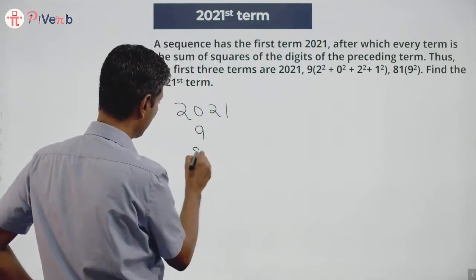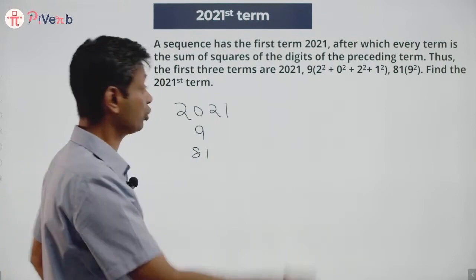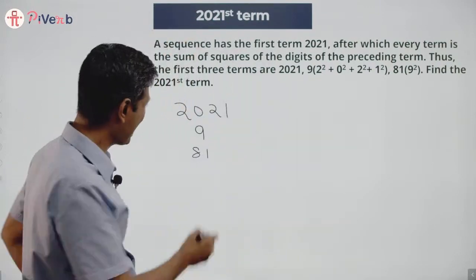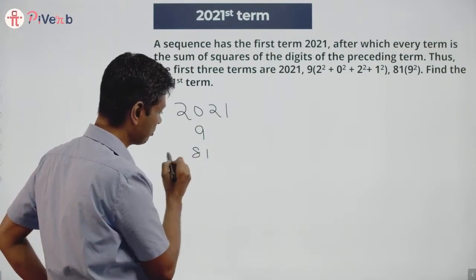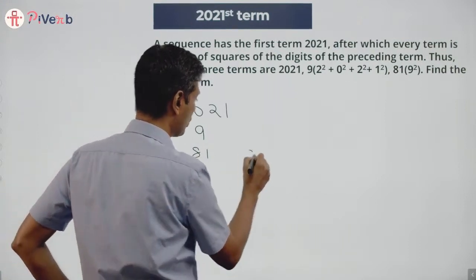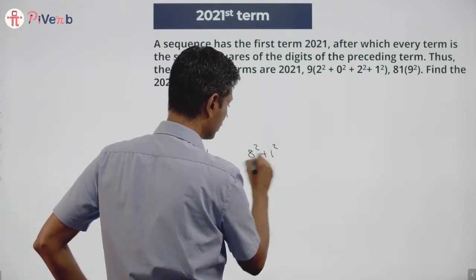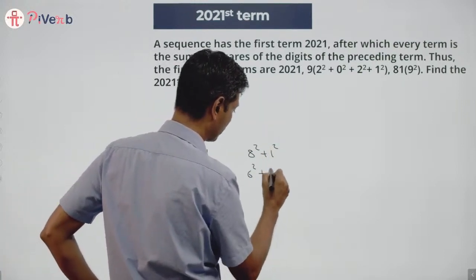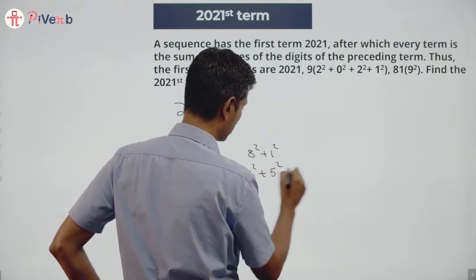is 81 (9²). Find the 2021st term. Let's do this. 81, next term is 8² + 1² = 64 + 1 = 65.